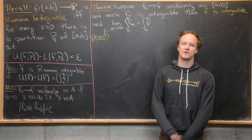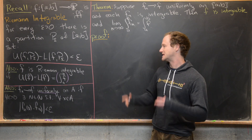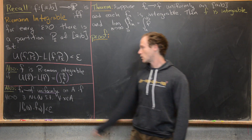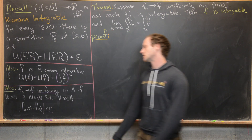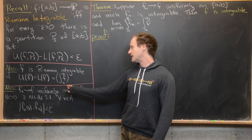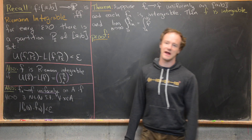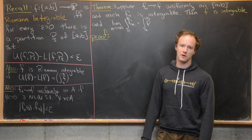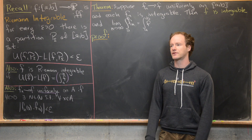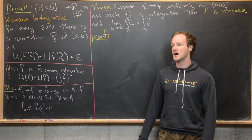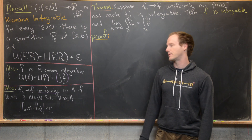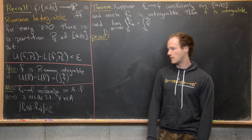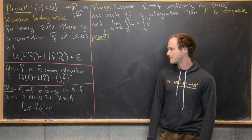This is a classification of Riemann integrability. The actual definition is: f is Riemann integrable if and only if the upper integral equals the lower integral, in which case we say that equals the integral from A to B of f. The upper integral is the infimum of the upper sums over all possible partitions, and the lower integral is the supremum of the lower sums over all possible partitions.